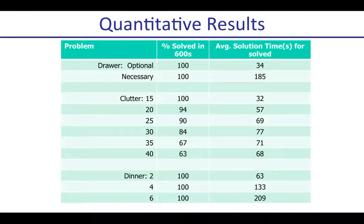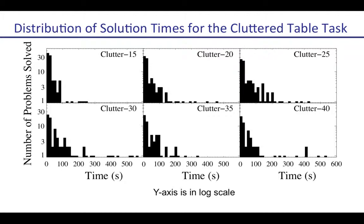Our system effectively solves the drawer problem and the dinner domain problems within 600 seconds. In the cluttered table problem, as we increase the number of objects while keeping the table size fixed, the problem becomes more constrained and the success rate within 600 seconds drops. A histogram of solve times shows that even for the 40-object cluttered problem, most instances are solved in a short amount of time, with some outliers and some problems that could not be solved at all within 600 seconds.